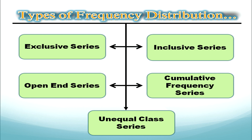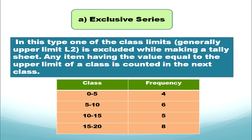Now that we've covered the concepts of frequency distribution, we can construct different types. There are five types of frequency distribution: exclusive series, inclusive series, open end series, unequal class series, and cumulative frequency series. We will discuss each in detail, learning their key features and construction with examples.